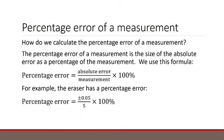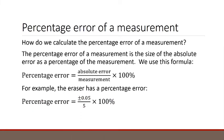For example, the eraser has a percentage error equal to plus or minus 0.05 over 5, and then we times by 100%. That gives us a percentage error of plus or minus 1%.